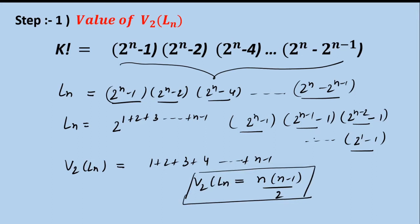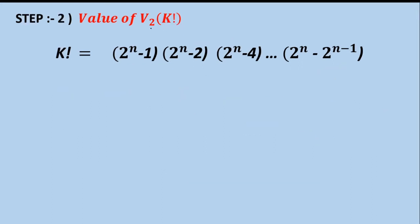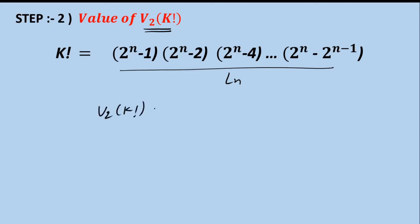Moving to Step 2, we calculate V2 of k factorial. This notation means the maximum power of 2 that divides k factorial. We calculated the RHS in the previous step; now for the LHS — k factorial — we use Legendre's formula. V2 of k factorial equals the summation of the floor of k divided by 2 raised to the power i, where i varies from 1 to infinity.